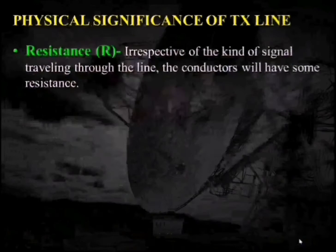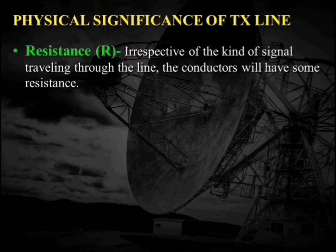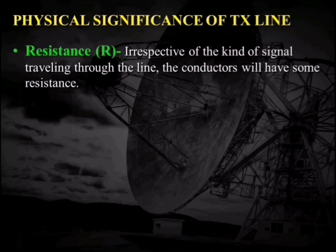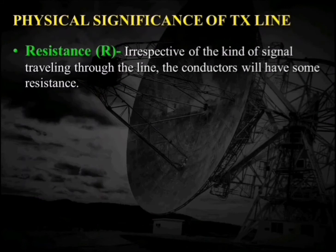Now let us discuss the physical significance of these transmission lines. First, we have resistance. This resistance comes into action because every conducting wire making our transmission line has some finite conductivity and hence finite resistivity. So it will offer some resistance to the flow of current, and there will be ohmic losses in the conductor or in the transmission line. To account for these ohmic losses, we have introduced the resistance R.